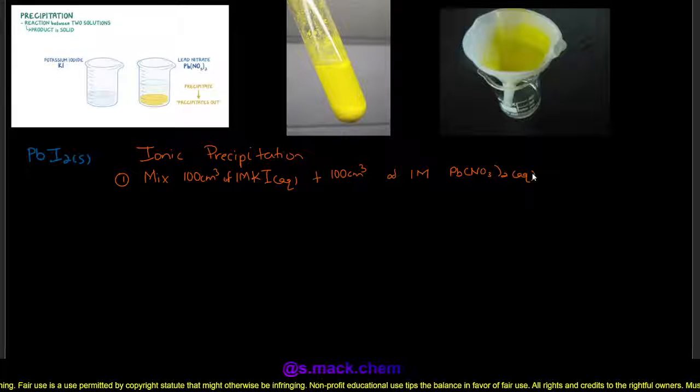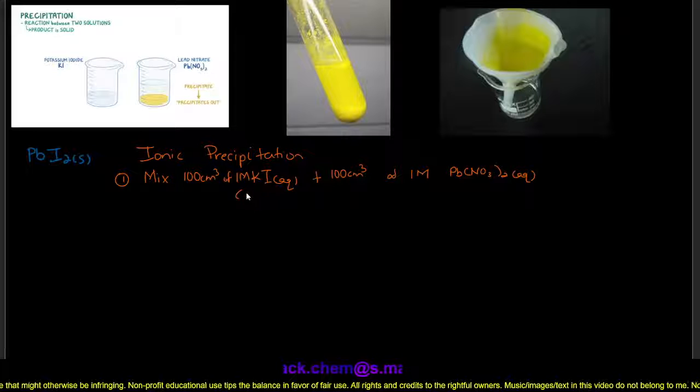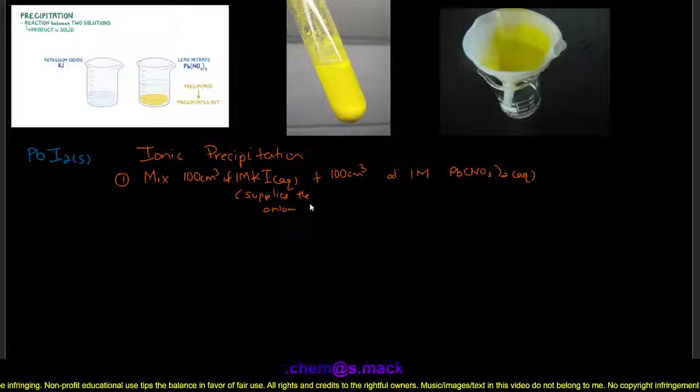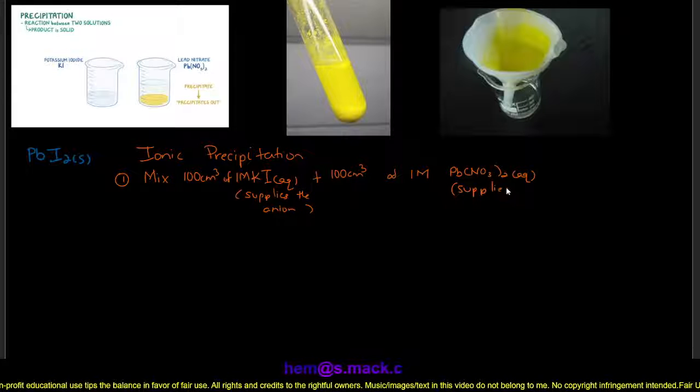In our first step, we have identified the two solutions that we are going to mix, and we should also identify what each solution is supplying. For example, potassium iodide supplies the anion, and lead nitrate supplies the cation.